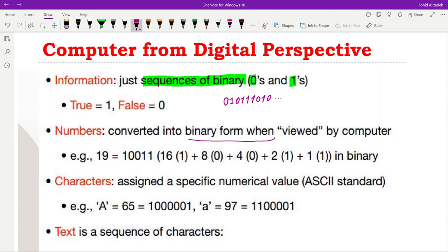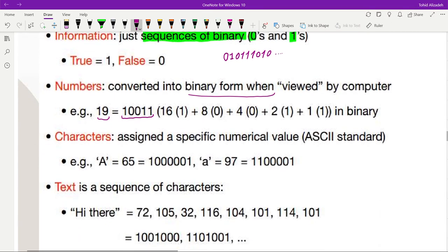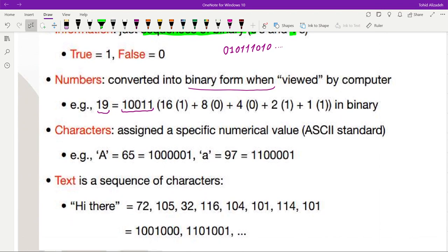As for numbers, they will be converted into binary form when viewed by the computer. For example, 19 in decimal form, or base 10, will be viewed as 1 0 0 1 1 in binary form. For numbers, it's straightforward — we just need to do the conversion between different bases, from decimal into binary.